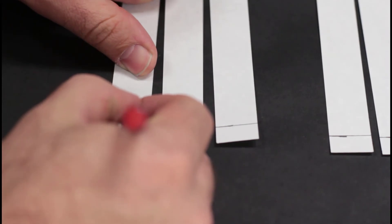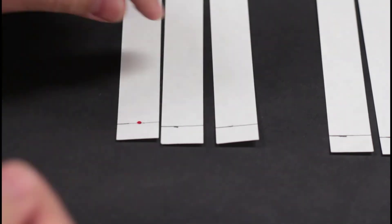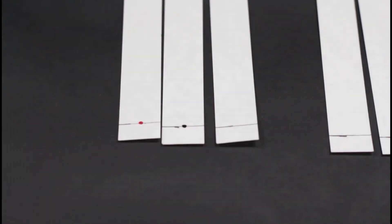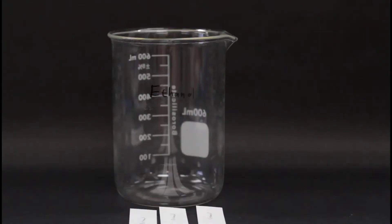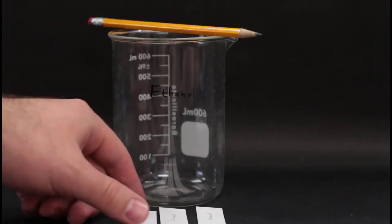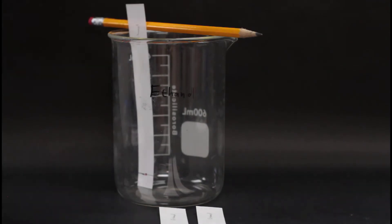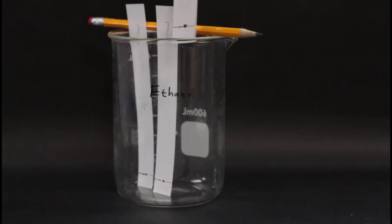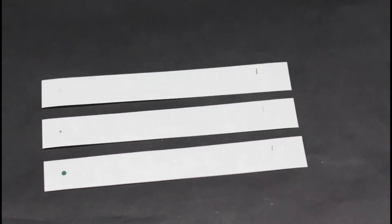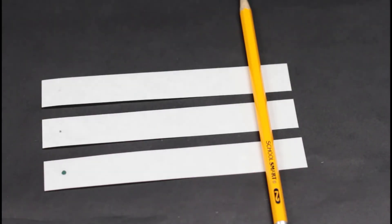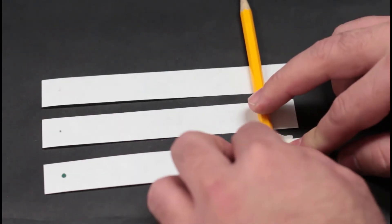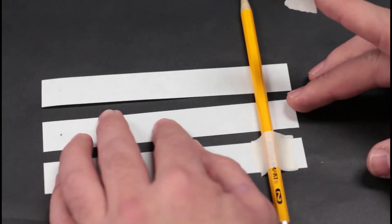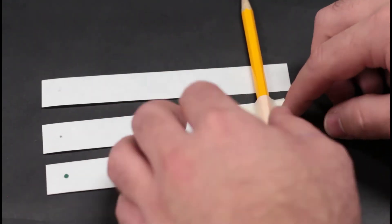Put a dot of ink on each chromatography paper in the center of the line that you drew. Set the paper in an empty beaker with a pencil across it so you can figure out where you need to tape the paper to the pencil so that it's just barely above the bottom of the beaker. We want it just barely touching that bottom so that it'll just be in a small pool of solvent.